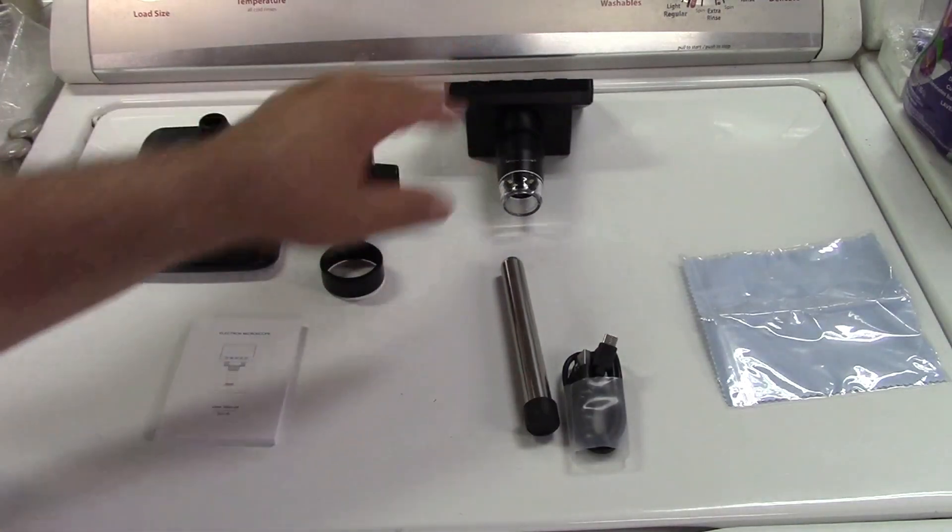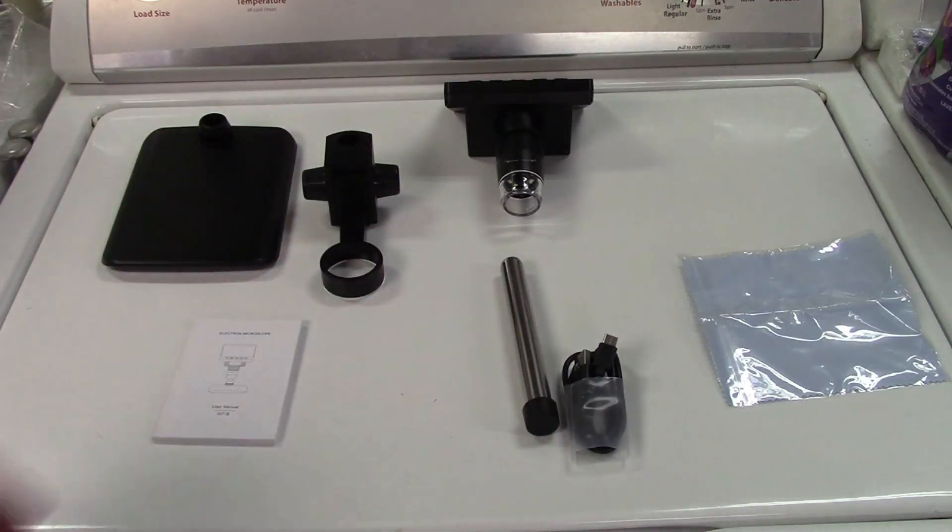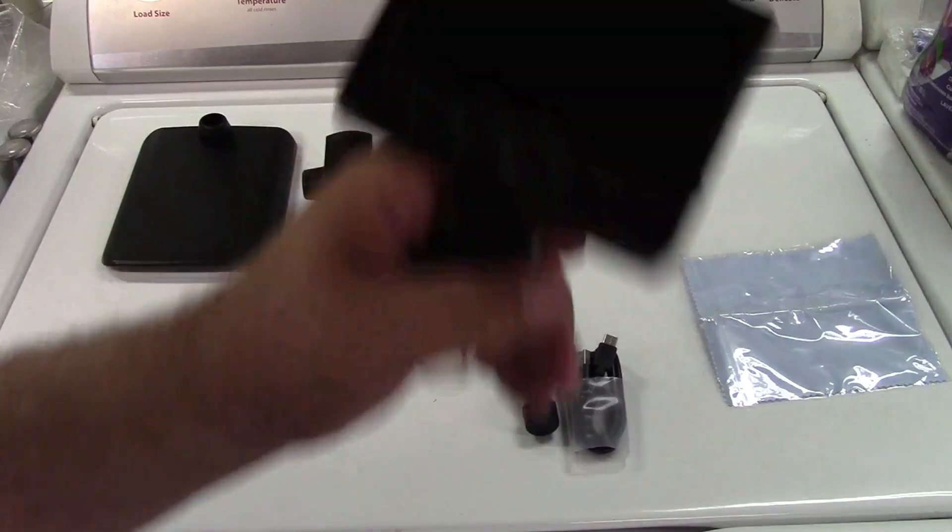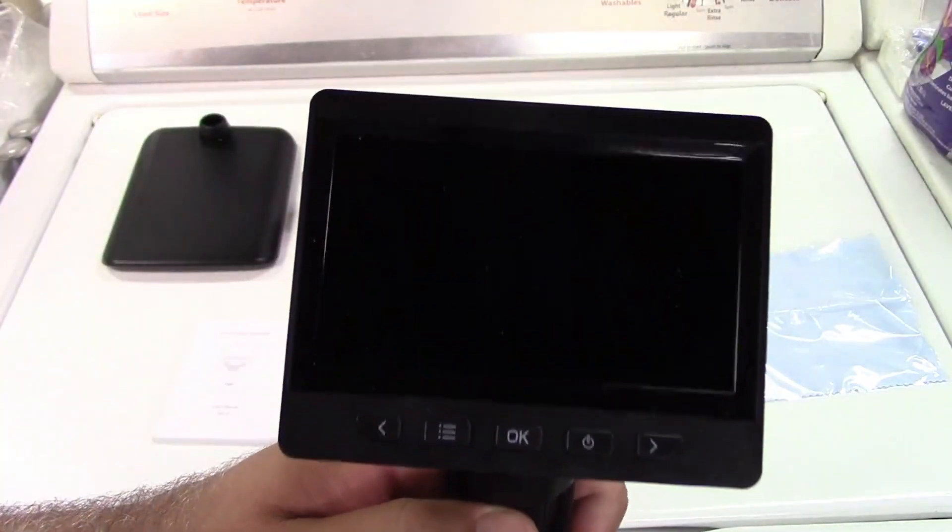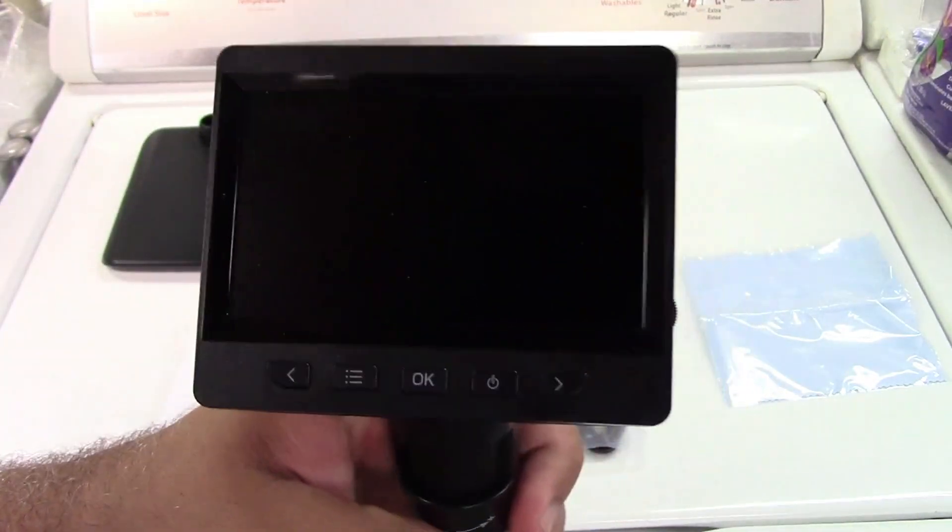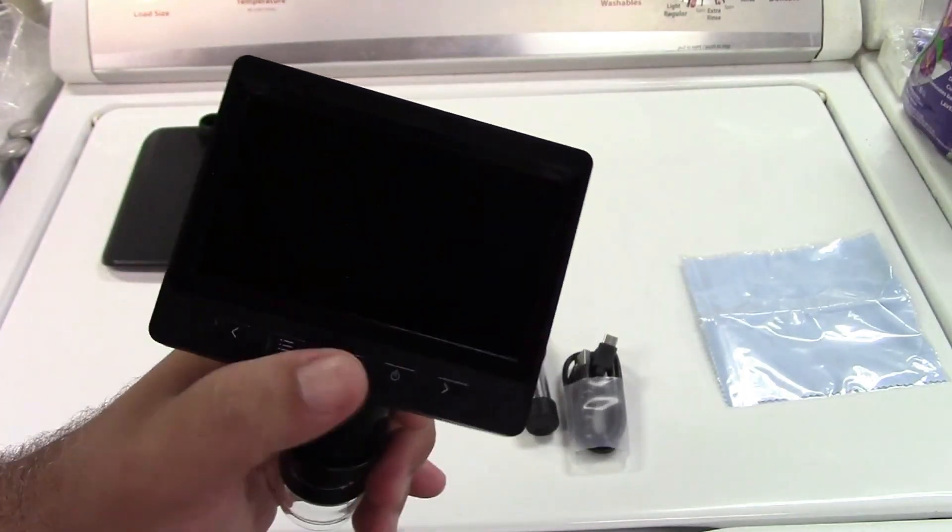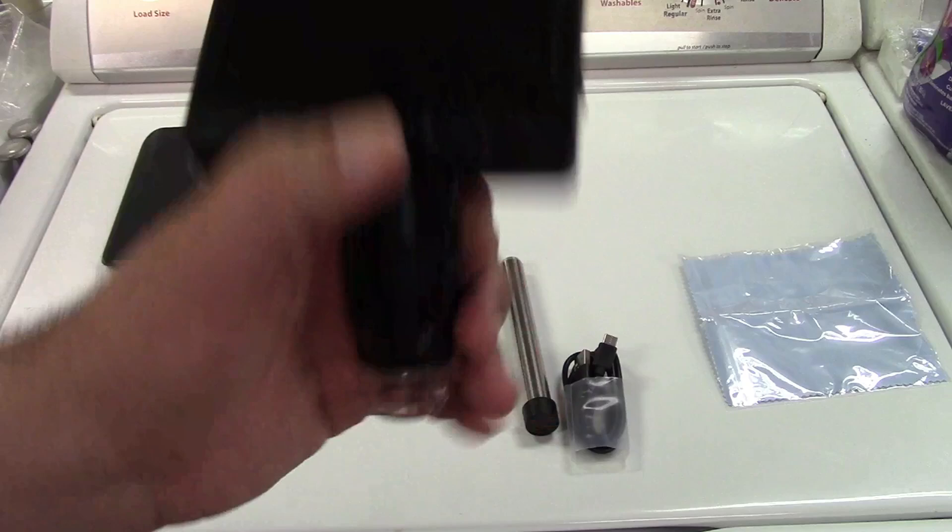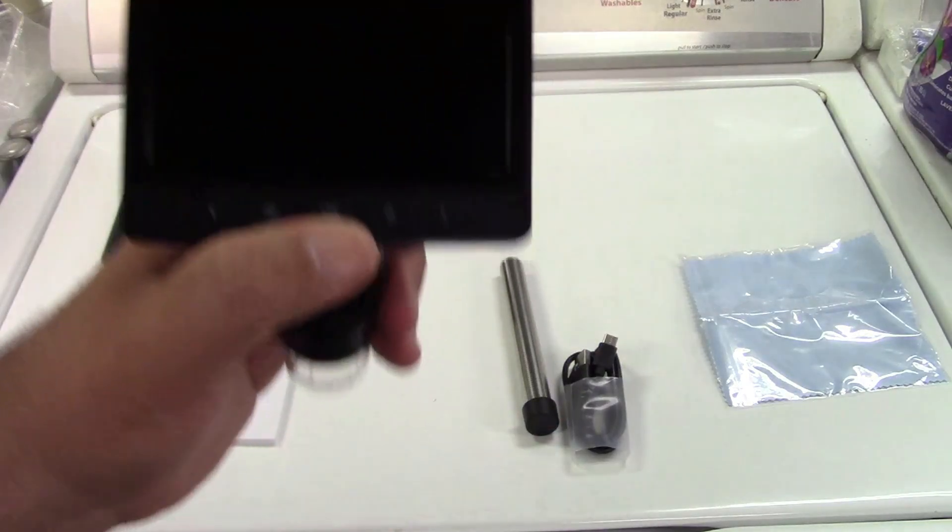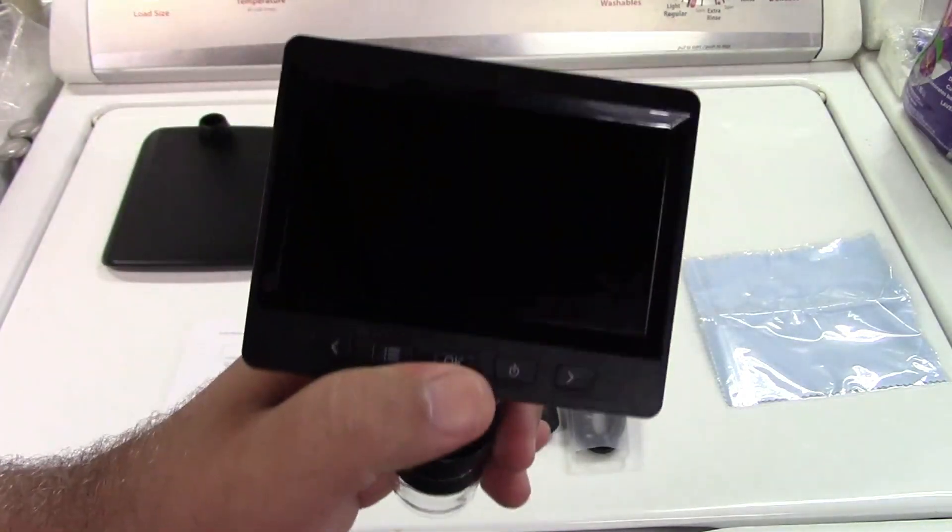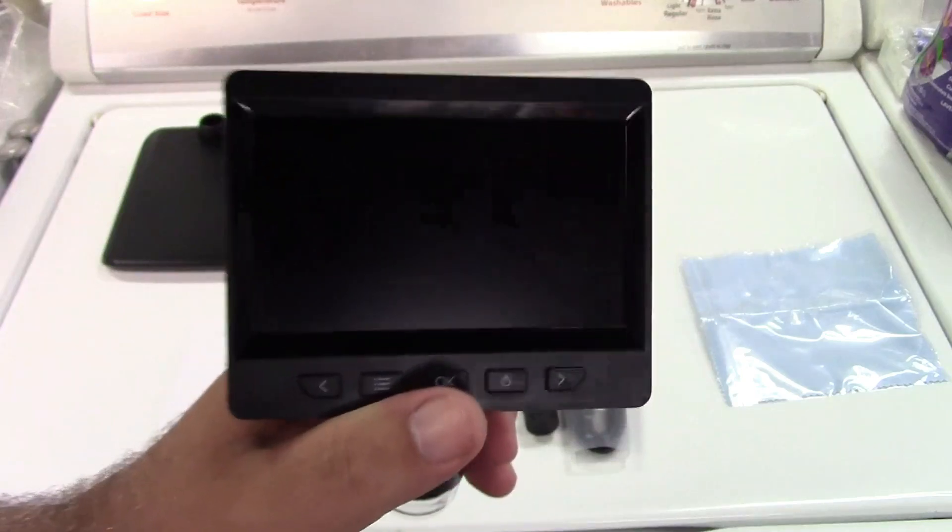This is a digital microscope, of course. It's got a 4.3 inch IPS type display for very clear images. This can record pictures as well as videos from what the scope sees. There is enough storage built into this for 100 photos but no videos.